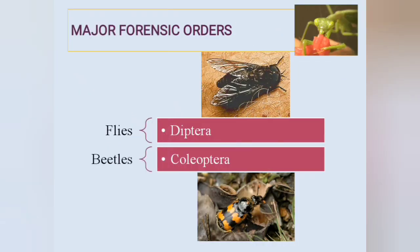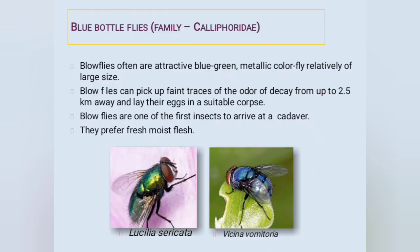The two major forensic orders are Diptera (flies) and Coleoptera (beetles), which are the main insects that feed on dead organisms. Blue bottle flies from the family Calliphoridae, order Diptera, are attractive insects that are blue or green in color with a metallic shine, and are larger than a common house fly. They can detect faint traces of decay odor from up to 2.5 kilometers away and lay their eggs on a suitable corpse.